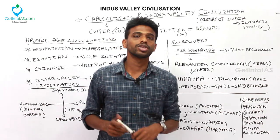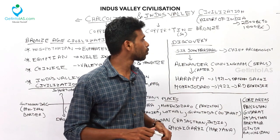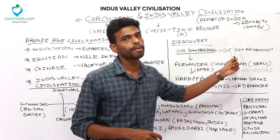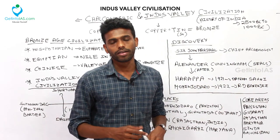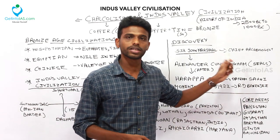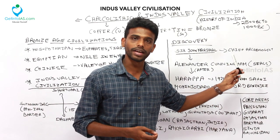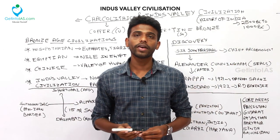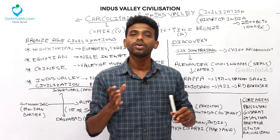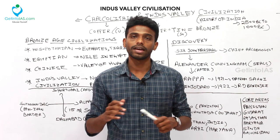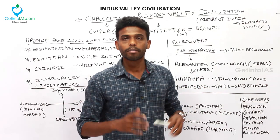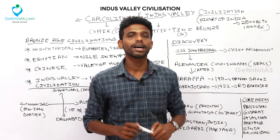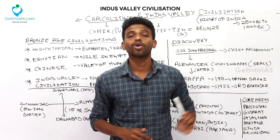How did archaeologists discover the Indus Valley Civilization? Under the supervision of Sir John Marshall during British rule in India, Alexander Cunningham came to India and found some seals at Harappan sites. Those seals were used for stamping and dated back to around 2500–2000 BC. Till that day, people believed that India's civilization began with the advent of the Aryans, but these seals proved that India's history dates back much further.